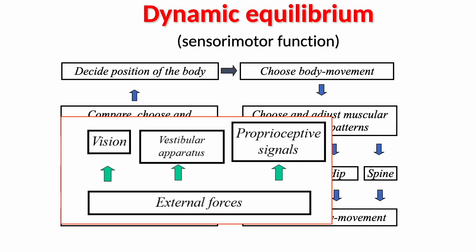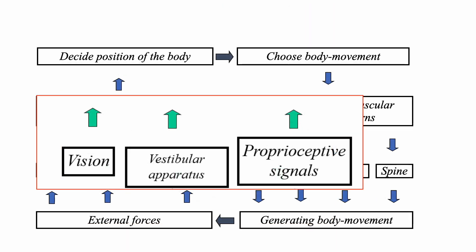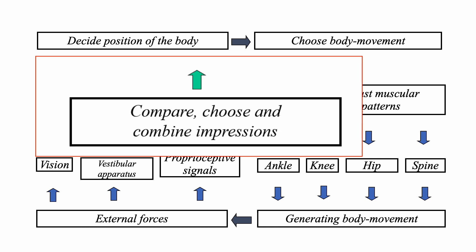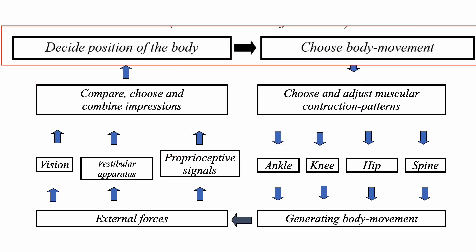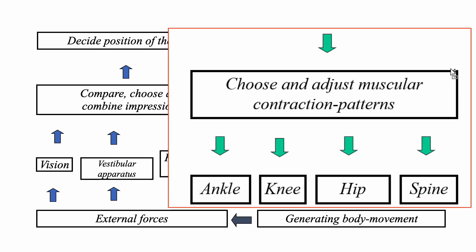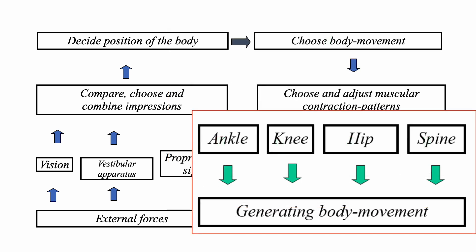External forces ignite sensory signal production in the vision, vestibular apparatus, and proprioceptors. These sensory signals transfer to the central nervous system. The central nervous system compares, chooses, and combines impressions. It gathers position senses of the body and chooses body movement. It decides and adjusts muscular contraction patterns to control movement of the ankle, knee, hip, spine, etc., and generates body movement.